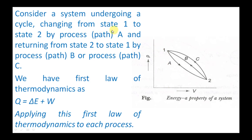We consider a system undergoing a cycle. The system changes from state 1 to state 2 by process or path A. It then returns from state 2 to state 1 either through path B or through path C.